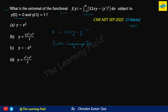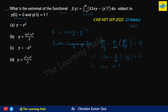Applying the Euler-Lagrange equation: del f/del y minus d/dx of (del f/del y-dash) equals zero. This gives 12x minus d/dx of (minus 2y-dash) equals zero, so 12x plus 2y-double-dash equals zero, which simplifies to y-double-dash plus 6x equals zero.